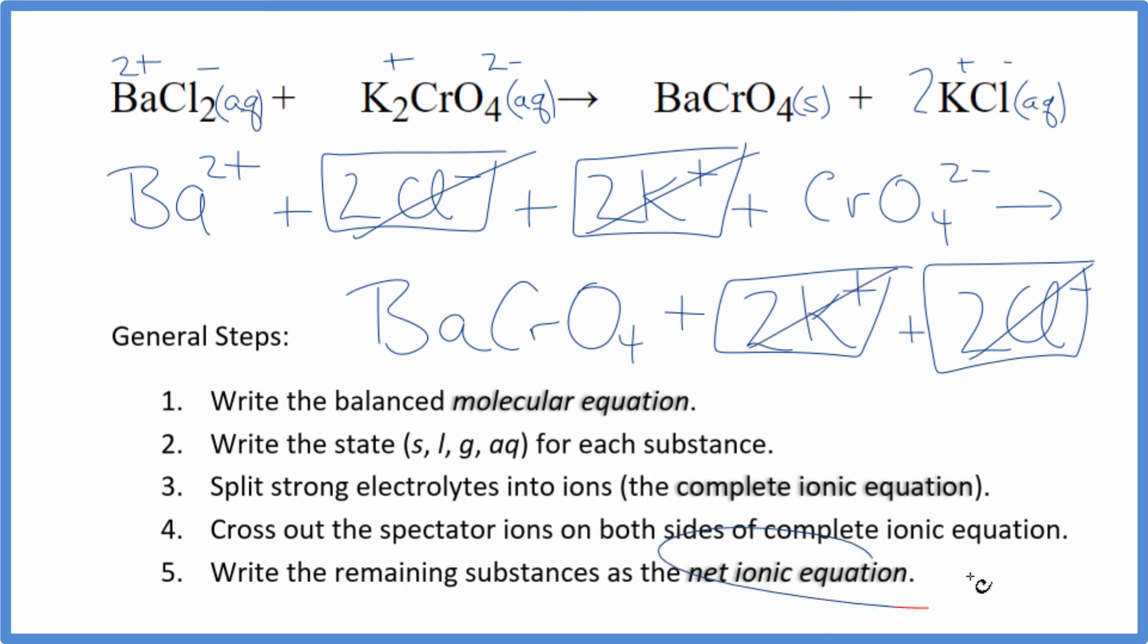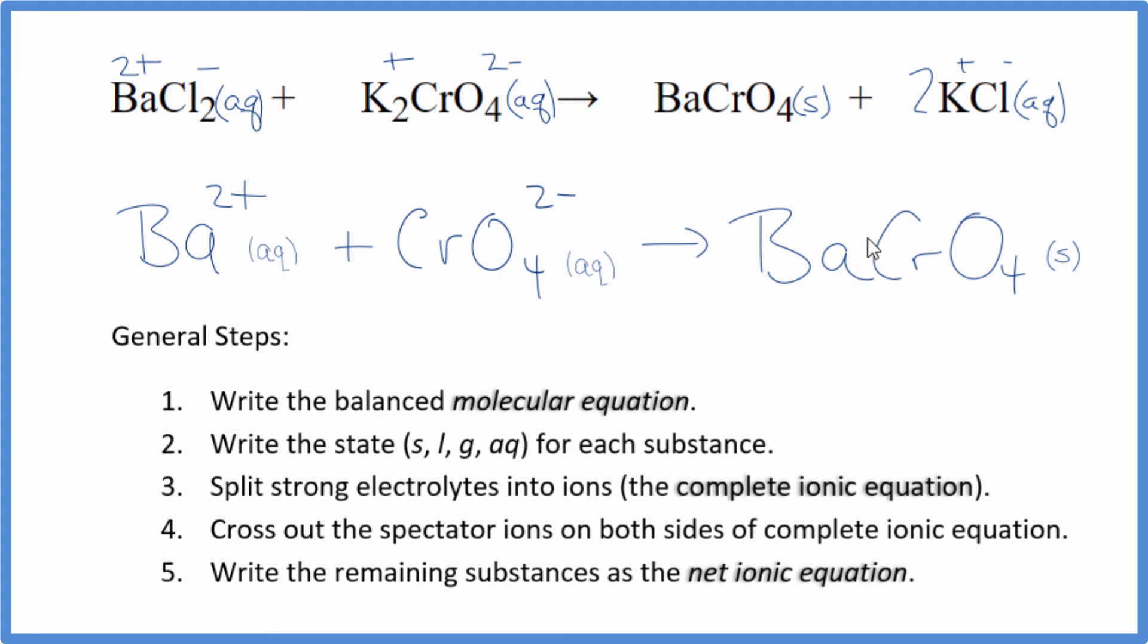What's left, that's the net ionic equation for BaCl₂ plus K₂CrO₄. I'll clean this up and write the states in, we'll have our net ionic equation. So this is the balanced net ionic equation for barium chloride plus potassium chromate.